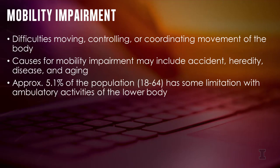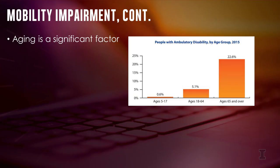Mobility impairment may also be a temporary condition — a broken leg or arm, for example. In the U.S., approximately 5.1% of the population aged 18 to 64 has some limitation associated with ambulatory activities of the lower body, including difficulty walking, using a wheelchair, cane, crutches, or walker. Aging is also a significant factor, as this figure jumps to 22.6% of the U.S. population for those 65 years of age and over.